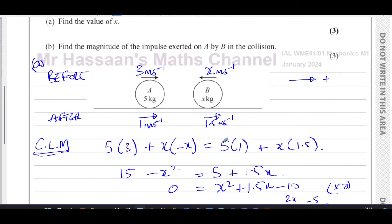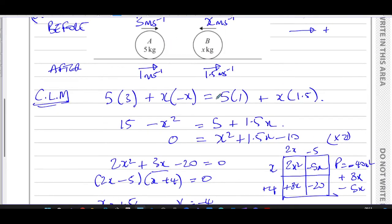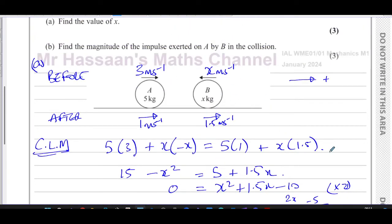Now if we wanted to make sure that we got the answer for the first part right, we could take X as the value we got, 2.5, and we could work out the impulse or the change of momentum in B. It has to be the same as the change of momentum of A because the impulse is equal and opposite. Let's try M times V minus U.